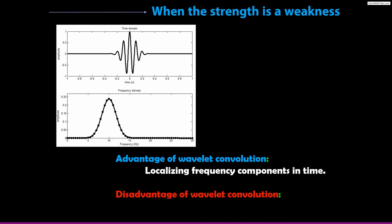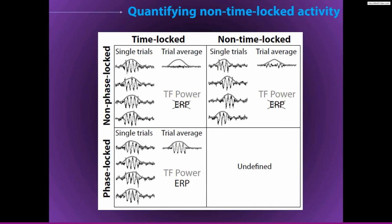But in fact this is not only an advantage — it can also be a disadvantage. The temporal precision might be so high that if some events are not really temporally very precise, you might fail to capture them using wavelet convolution. Time-frequency analyses or time-frequency power is robust to phase-locked or non-phase-locked activity. As long as the activity is roughly time-locked, time-frequency power is very good at extracting those dynamics from the signal.